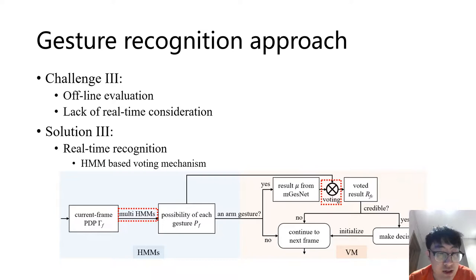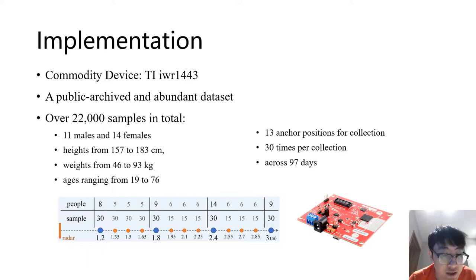Except for the above three solutions, we also provide an abundant mHomeGest dataset. We predefined 10 multi-jointed gestures to train mHomeGest by recruiting 25 volunteers, including 11 males and 14 females. They were asked to perform each predefined gesture 30 times, and the training dataset is archived across 97 days and accumulates over 22,000 samples in total. The details are available on our website.